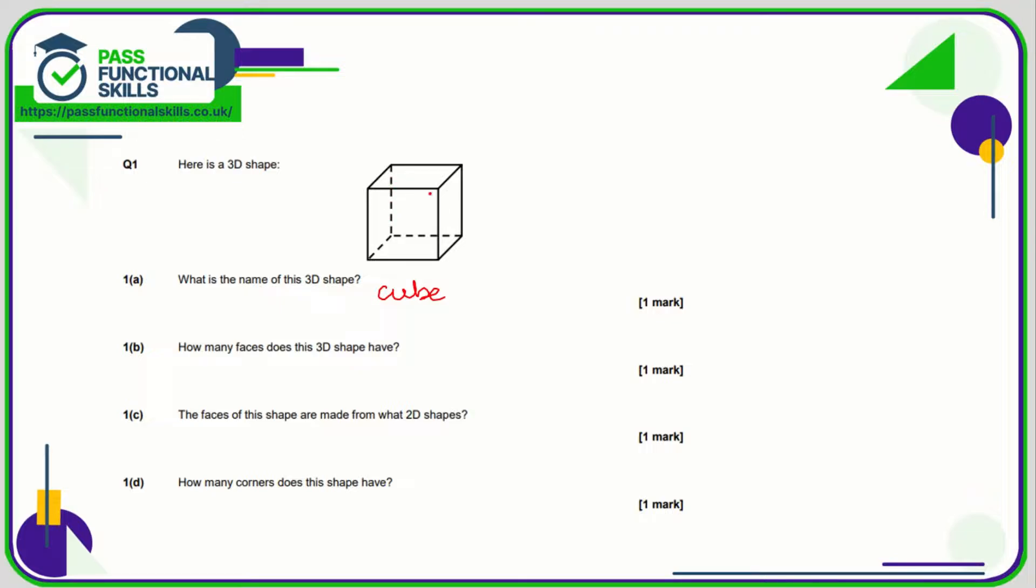Although it's quite difficult when it's drawn on a 2D screen, we've got one on the left hand side, the right hand side, the top, the bottom, and the front and the back. So that's six in total.